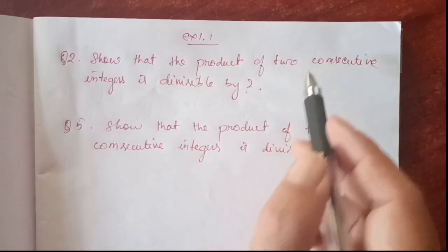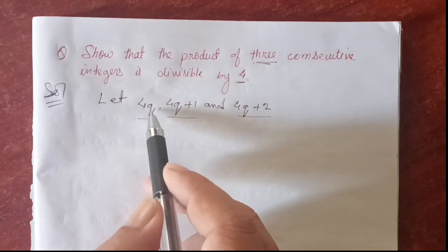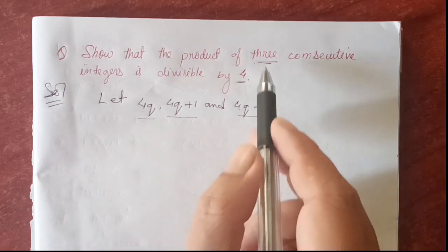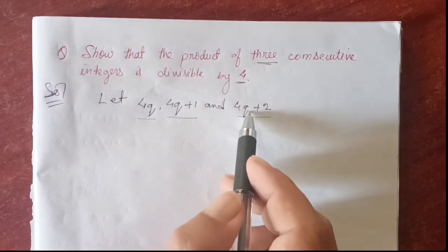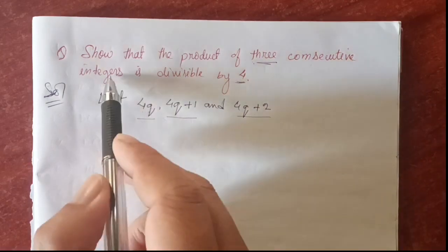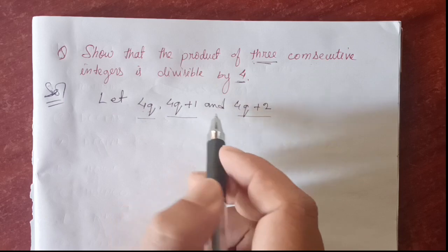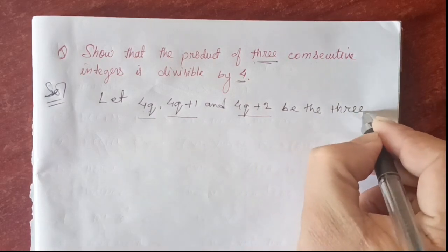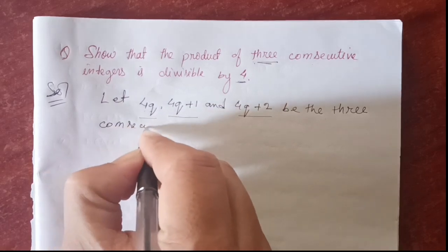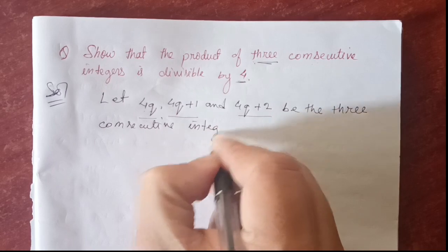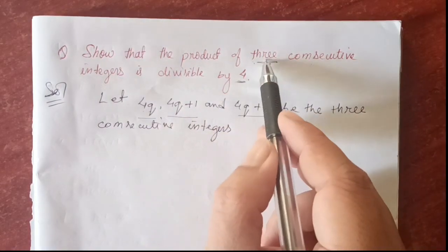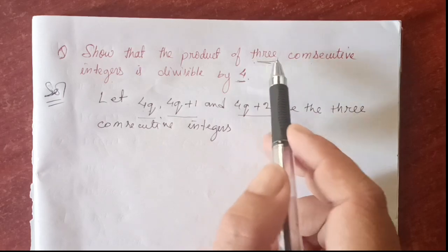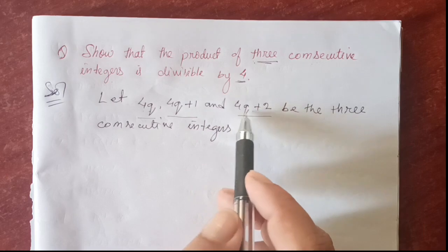We write only 3 terms because the question says 3 consecutive integers. So we write 4q, 4q plus 1, 4q plus 2 — the next number would be 4q plus 3 but we don't need that because we are writing only 3 terms: one, two, three. Let 4q, 4q plus 1, and 4q plus 2 be the three consecutive integers.